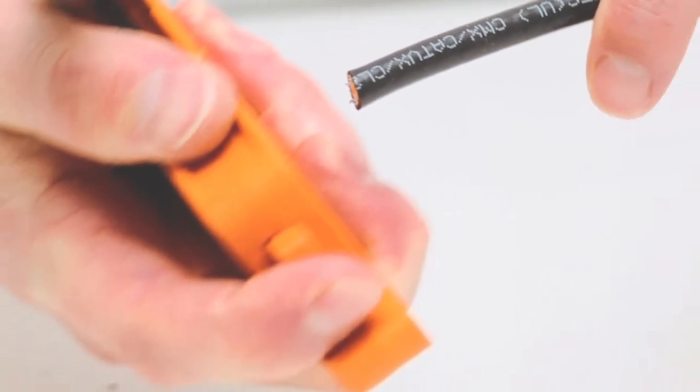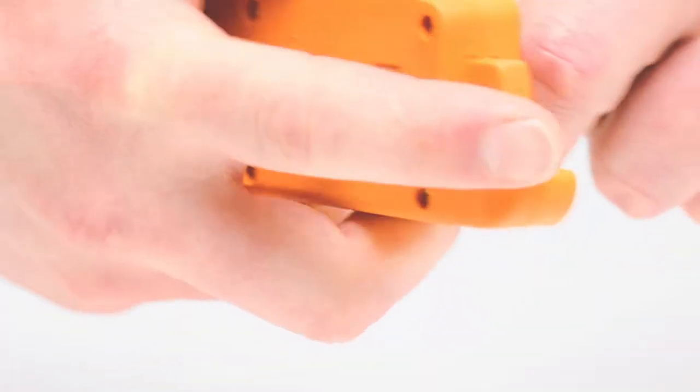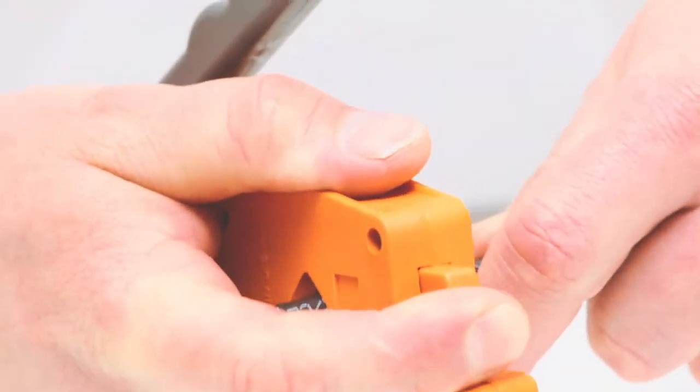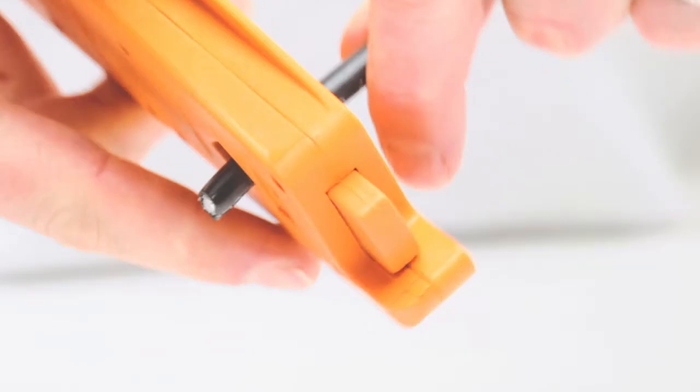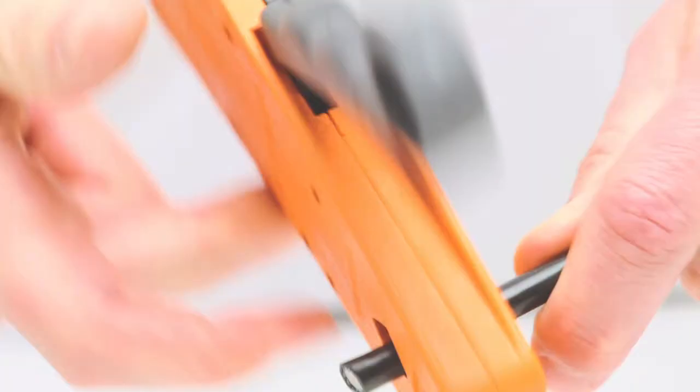To accomplish this I'm going to insert my cable into the IT-1000 tool, push down on the button, and rotate it around the outside of the jacket. The dual blades will cut back both the jacket and dielectric at the same time.